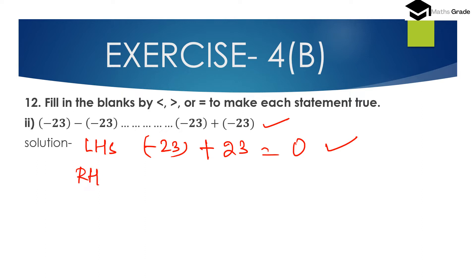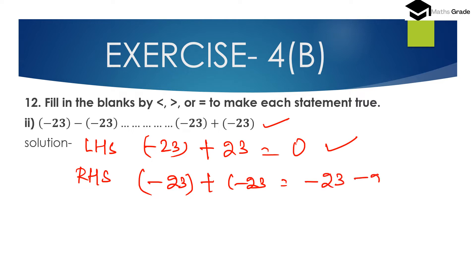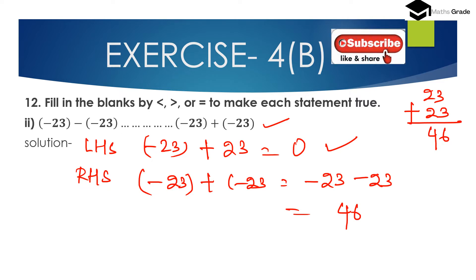Now the right hand side value is minus 23 plus of minus 23. Here both integers have equal sign — both are negative. First add without sign: 23 plus 23 is 46. Then place the negative sign before 46, giving minus 46. So right hand side value is minus 46.